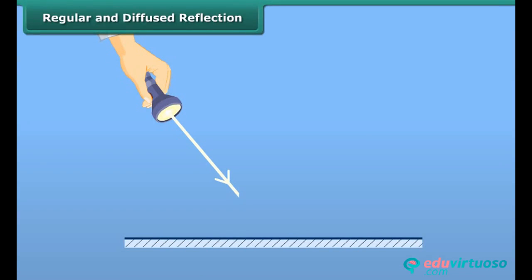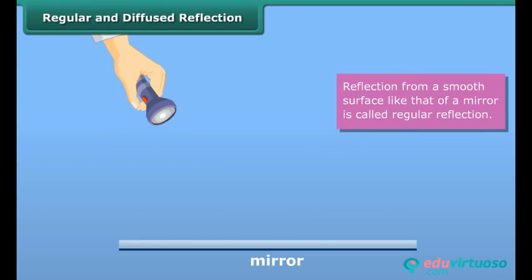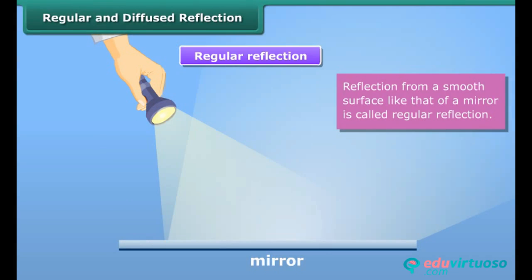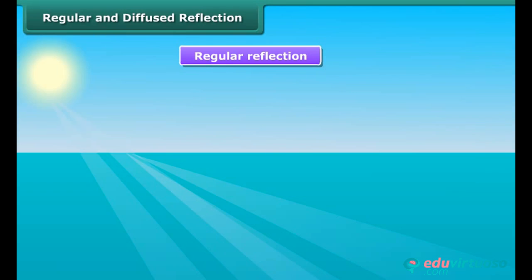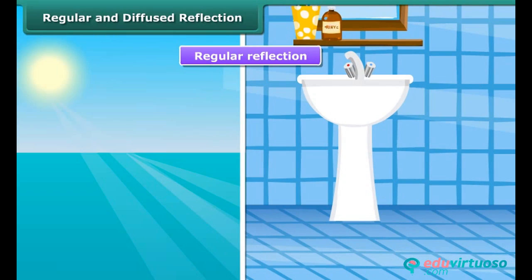We now know that light falling on an object is reflected. Reflection from a smooth surface like that of a mirror is called regular reflection. Reflection of light from the water surface and highly polished floors are also examples of regular reflections. Images are formed by the regular reflection of light.